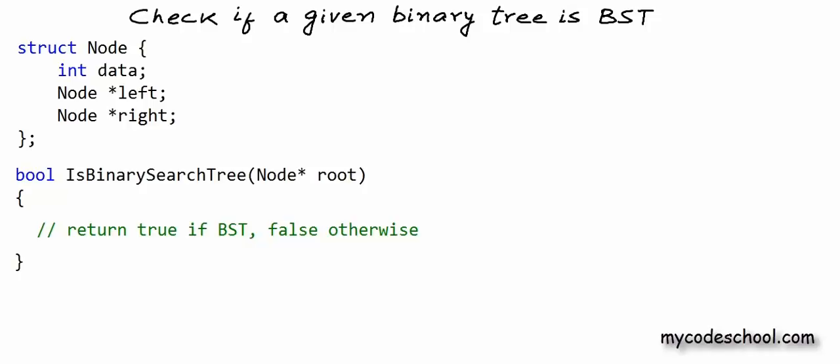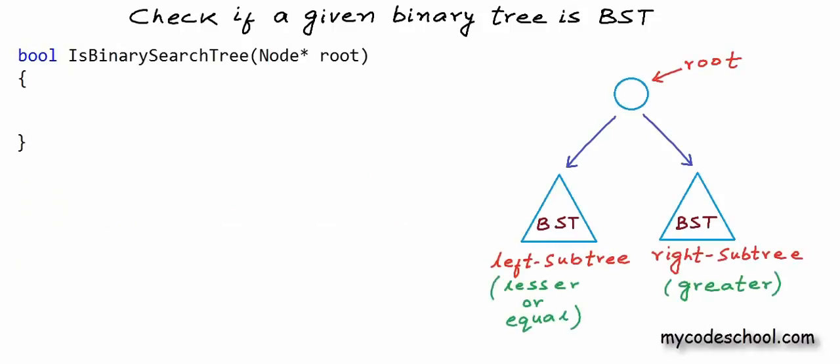There are multiple approaches and we are going to talk about all of them. The first approach is easy to think of but not so efficient. For a binary tree to be a binary search tree, all elements in the left subtree must be lesser or equal, all elements in the right subtree must be greater, and both left and right subtrees should themselves also be binary search trees.